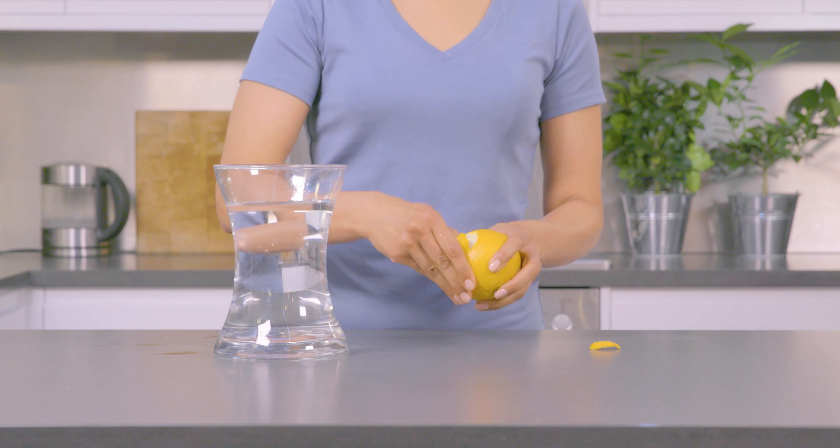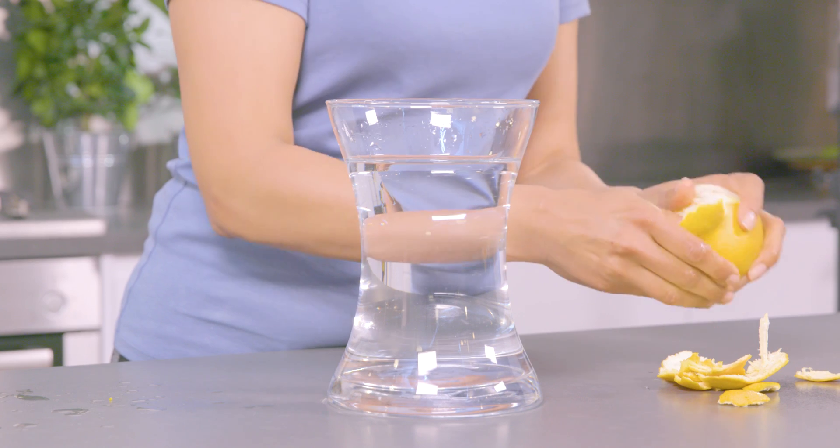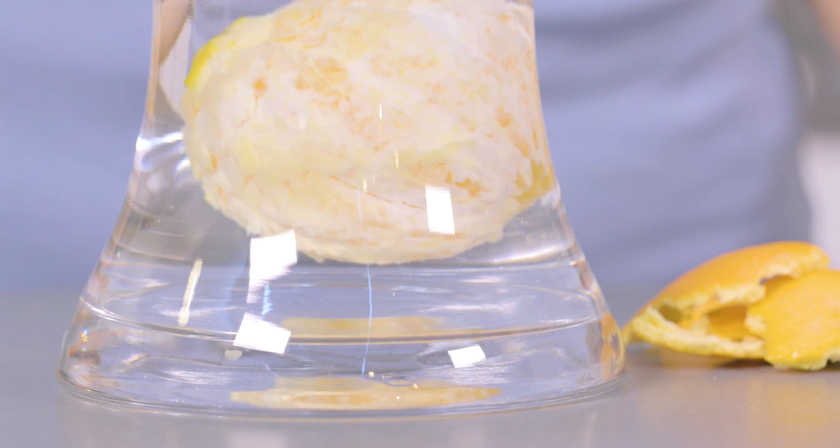Now peel the orange. We're making the orange lighter by taking away the peel, so it should probably float. What do you think will happen? It sinks.